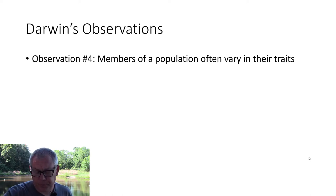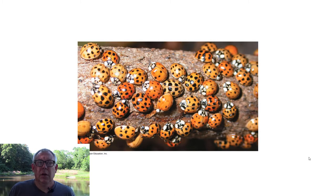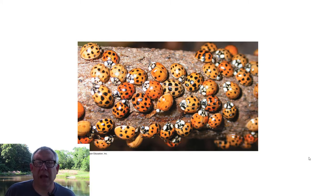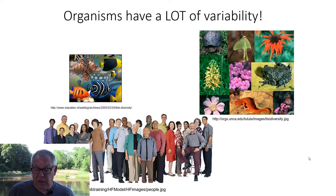Another thing Darwin pointed out: members of a population often vary in their traits — there's variability. You look at any population and you can see differences among individuals. Maybe you have to be an expert — all the blades of grass in a lawn might look the same to you, but a grass expert would spot differences. Look at these ladybugs: some people might say they all look the same, but you can clearly see variability — different sizes, different spot patterns. If you study biology for five minutes, you see that variability within and between populations is common.